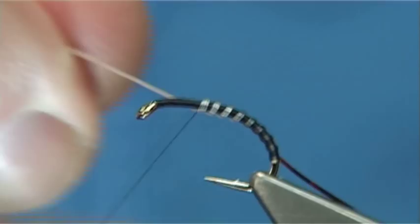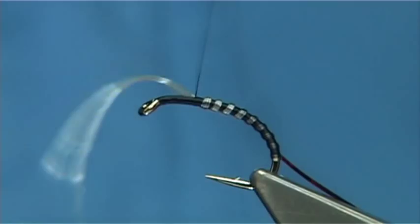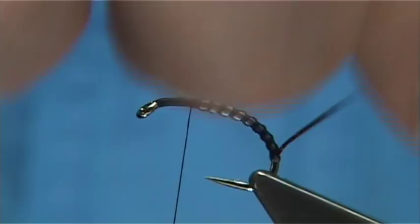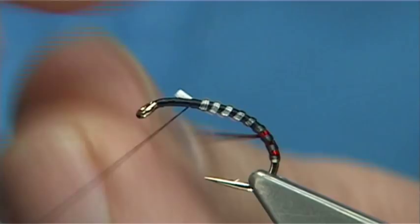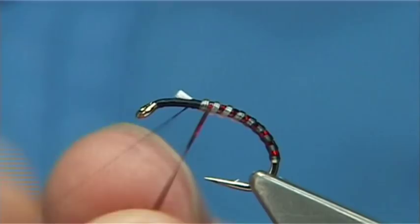And then, three or four or more turns to make sure it's secure. Trim away the excess. And then, bring the red holographic up through and in between each turn of the Uniflex. All the way. That point there, cross your thread. Two or three turns to make sure it's secure.